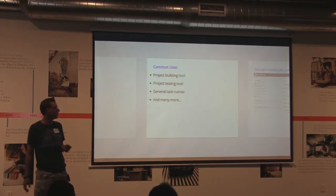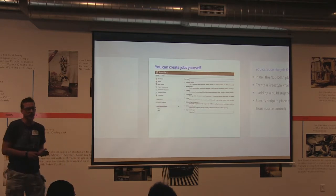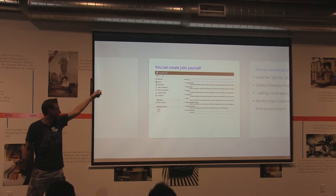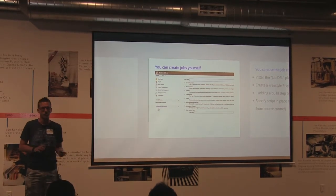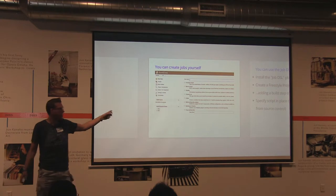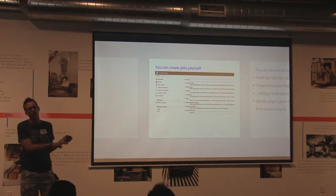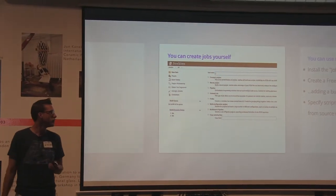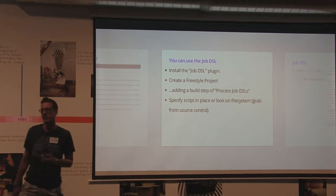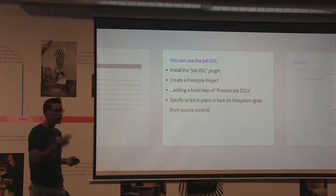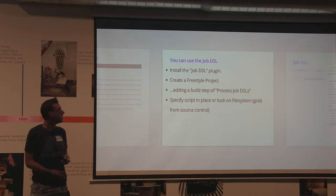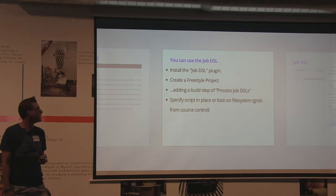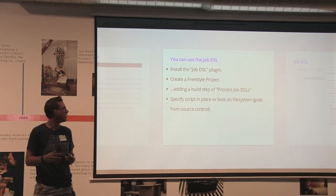Within Jenkins you can manually create a job by clicking 'New Item' and picking the job type. You can also copy an existing item, which is useful when a new job looks similar to an existing one. Alternatively, you can use the Job DSL plugin. To do that, go into Manage Jenkins, install the Job DSL plugin, and create a freestyle project.